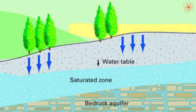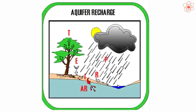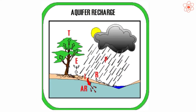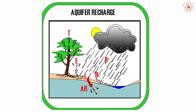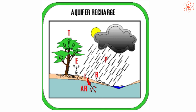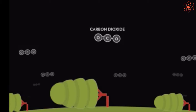Fifth, deforestation leads to decrease in the water holding capacity of soil. Hence, the amount of water that infiltrates from soil to ground gets reduced. This reduces the water table of the area.